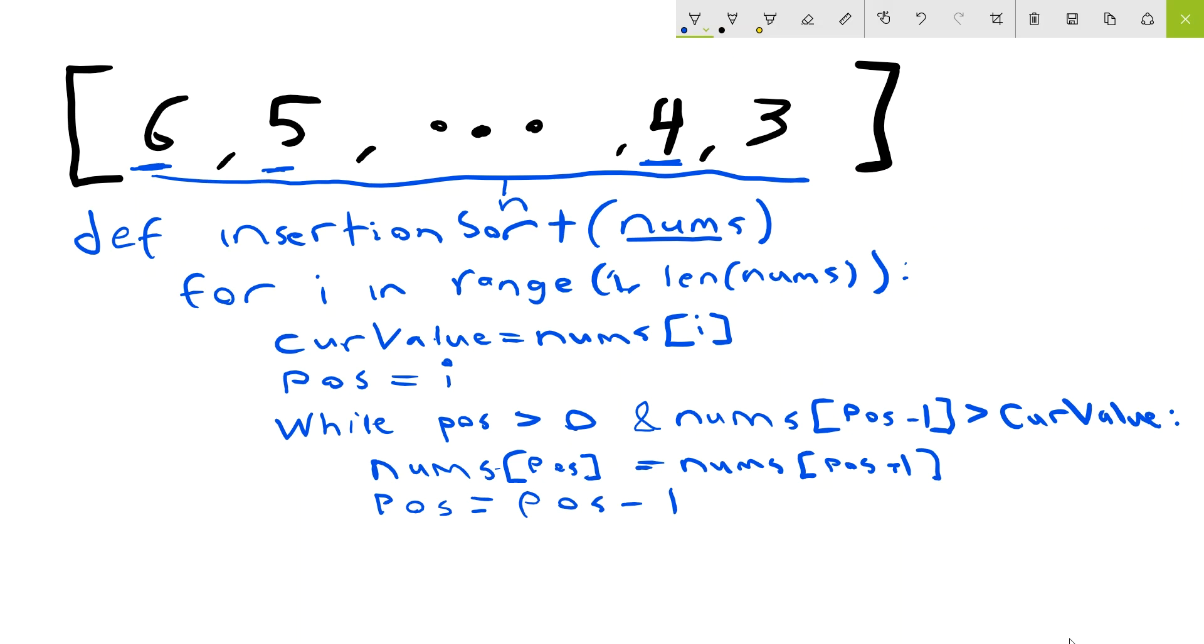Then finally, we want to update our current value to be in the final resting spot. So that will be nums, this is outside the while loop because we're done swapping, nums position equals the current value.